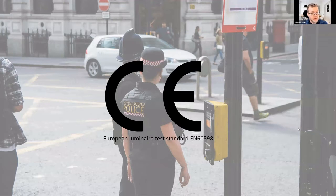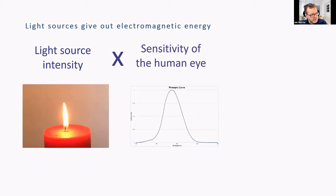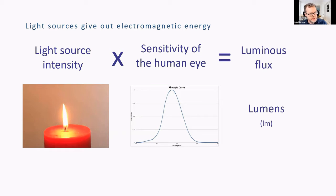Understand light and understand human beings. I've got a candle and it's giving out electromagnetic energy. But we can't see all of that — we can feel some of it; if you put your hand near it, it gets hot. If I take the output of that and multiply it by what my eyes can see — this has a wonderful name, the photopic curve or the V-lambda curve — that's my response to different colours of light. If I multiply those two together, I get a thing called luminous flux. You might see it on a box of luminaires: lumens. You put so many watts of power in, but that's rubbish — you need the number of lumens out.